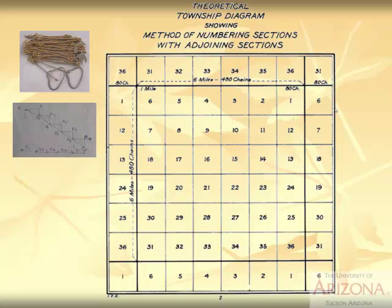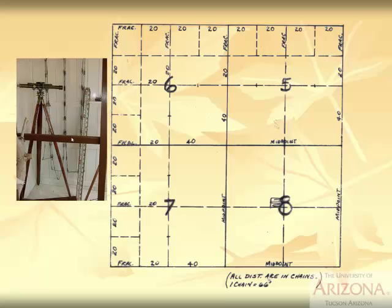There are 10 chains in a furlong and 80 chains in a statute mile. You can see a picture of an old set of chains and an example of a survey done with chains. When doing any kind of survey, we always measure horizontal distance — you can't measure up the surface of a slope. Surveyors had to hold the chains up and measure across to ensure accuracy. Here's an original survey showing townships laid out with sections, all measured in chains at 66 feet each.